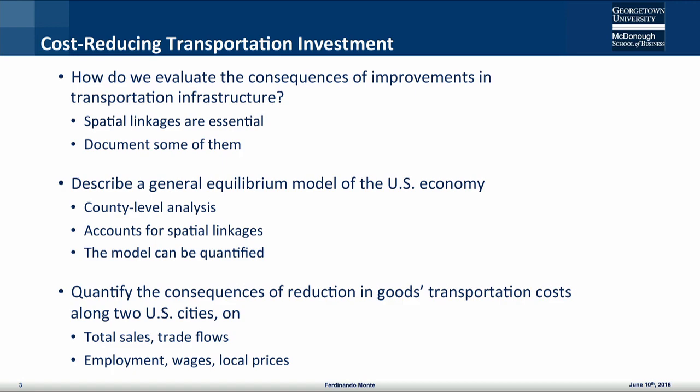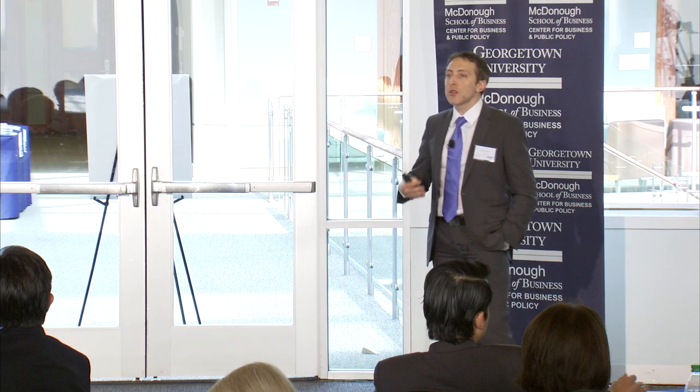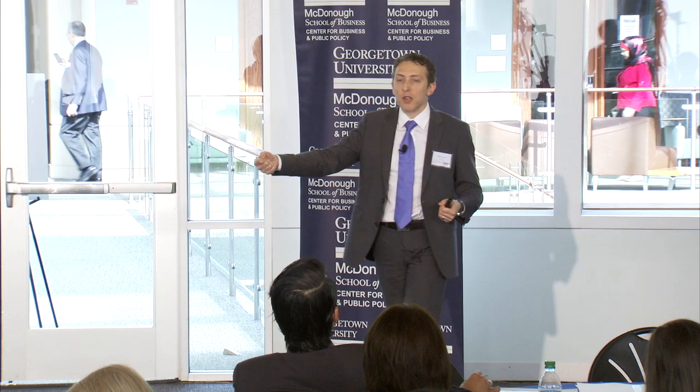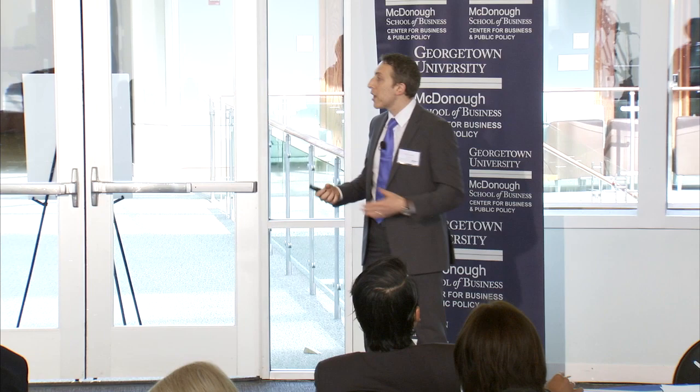I will first show you some measures of these spatial linkages that are relevant for my purposes, and then I will describe a model. This is going to be a county-level model of the U.S., so the geographic unit of aggregation is going to be counties. This model is going to incorporate these spatial linkages, and it's going to be a quantitative model in the sense that if you provide me with engineering estimates of how much transportation costs are declining from any place to any other place, the model will tell you how much trade flows will change from any place to any other place, but also how much wages, employment, and real income will change across the territory.